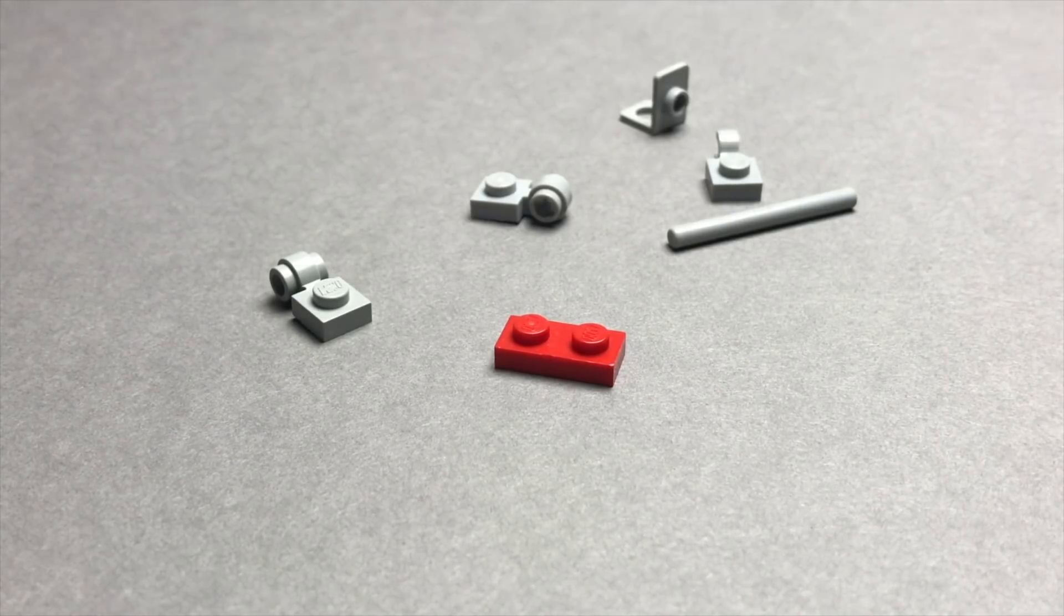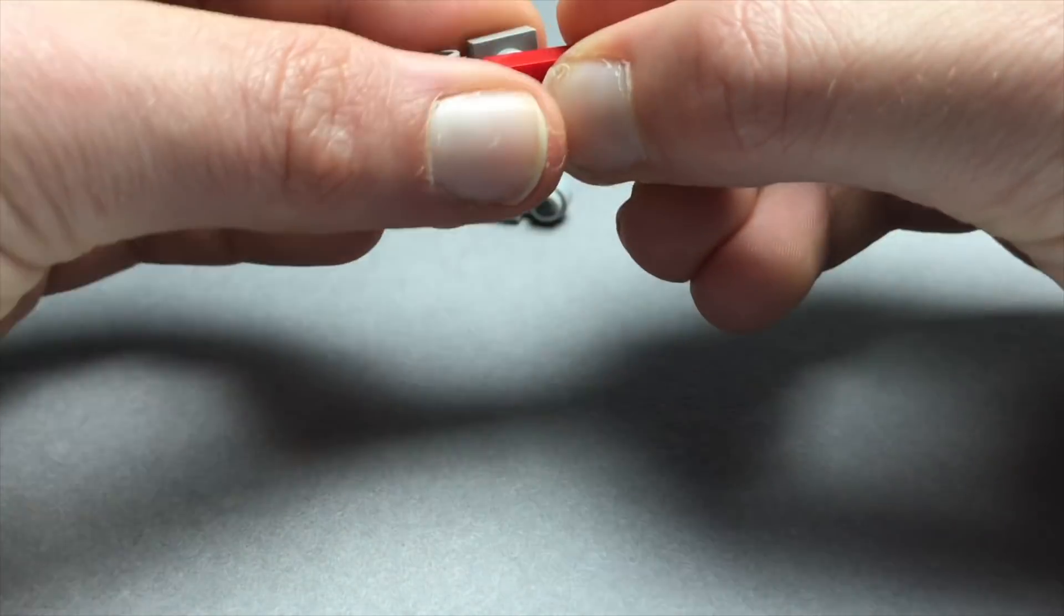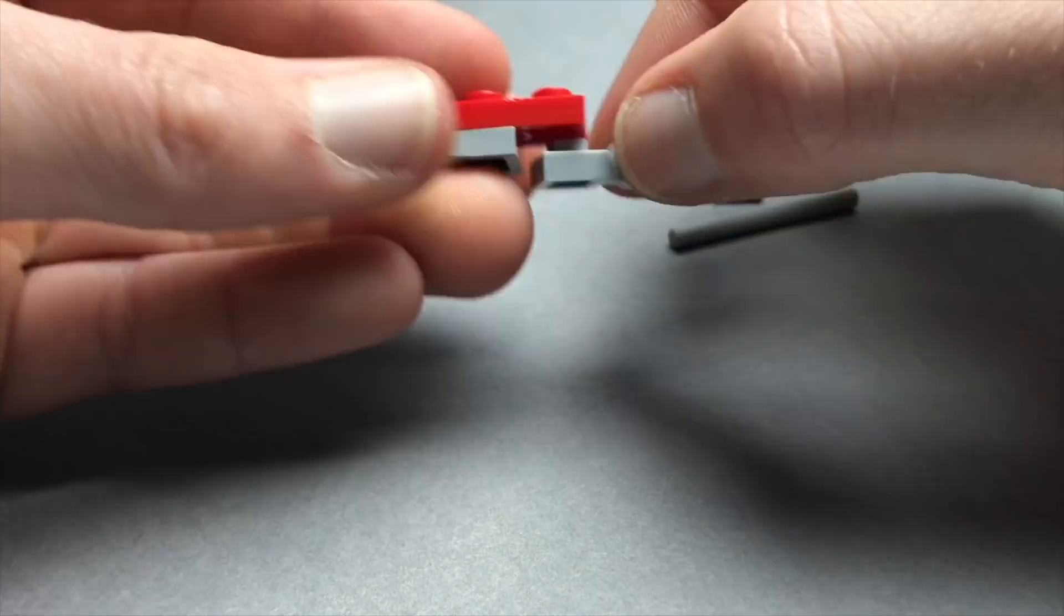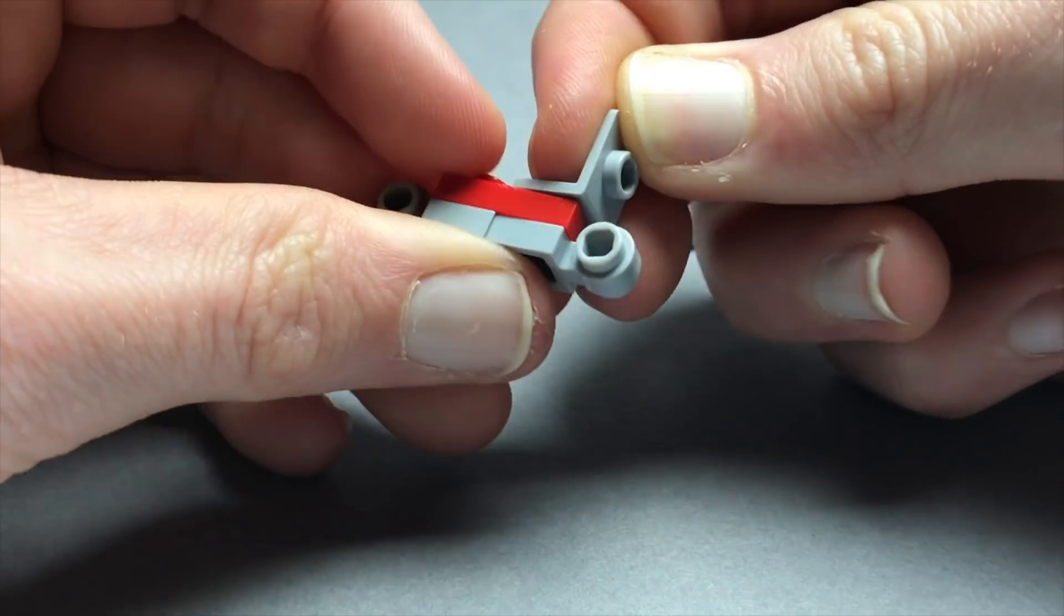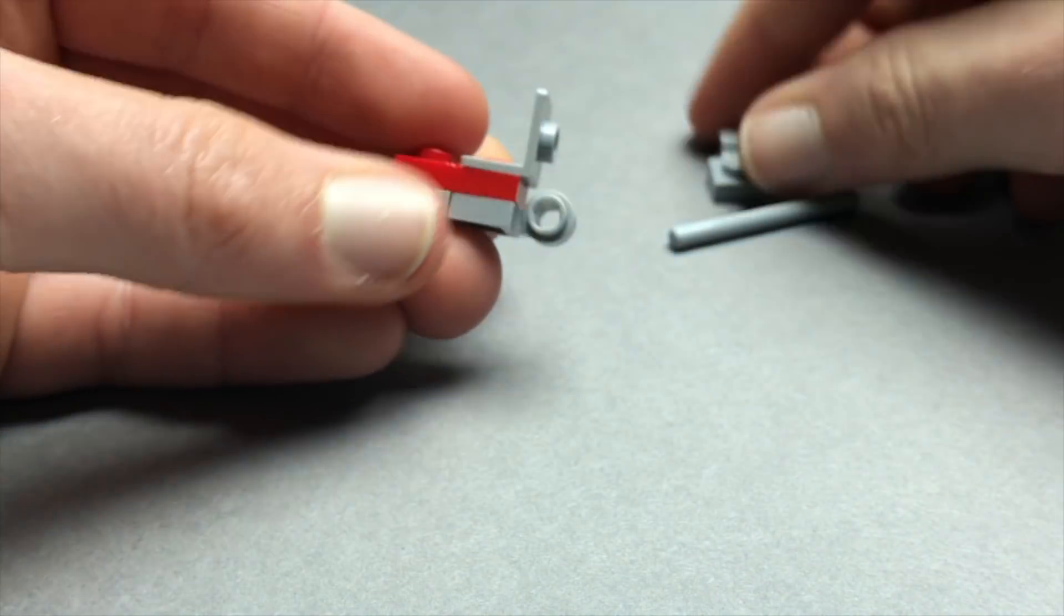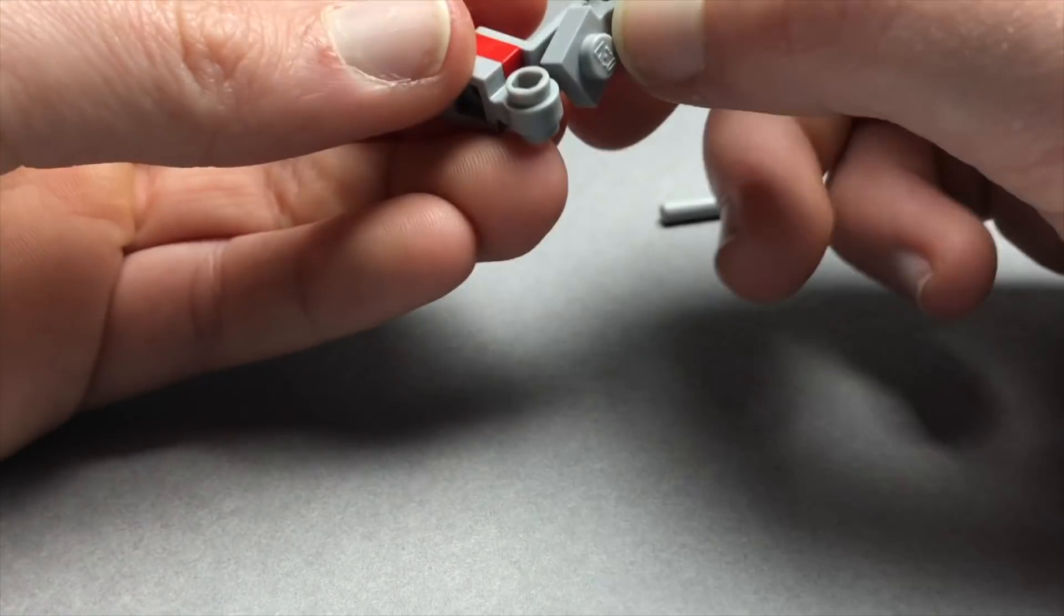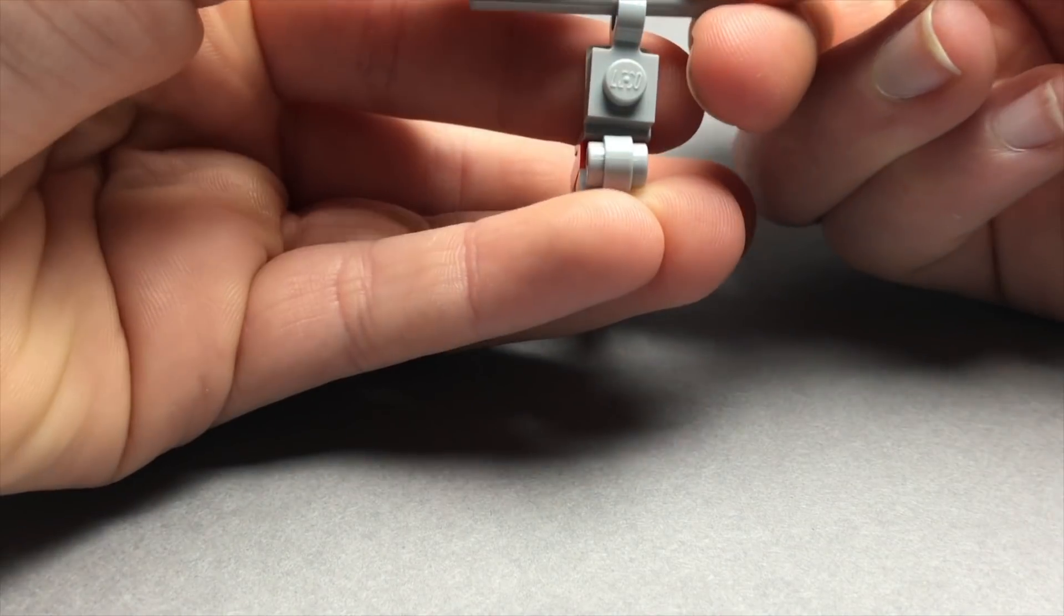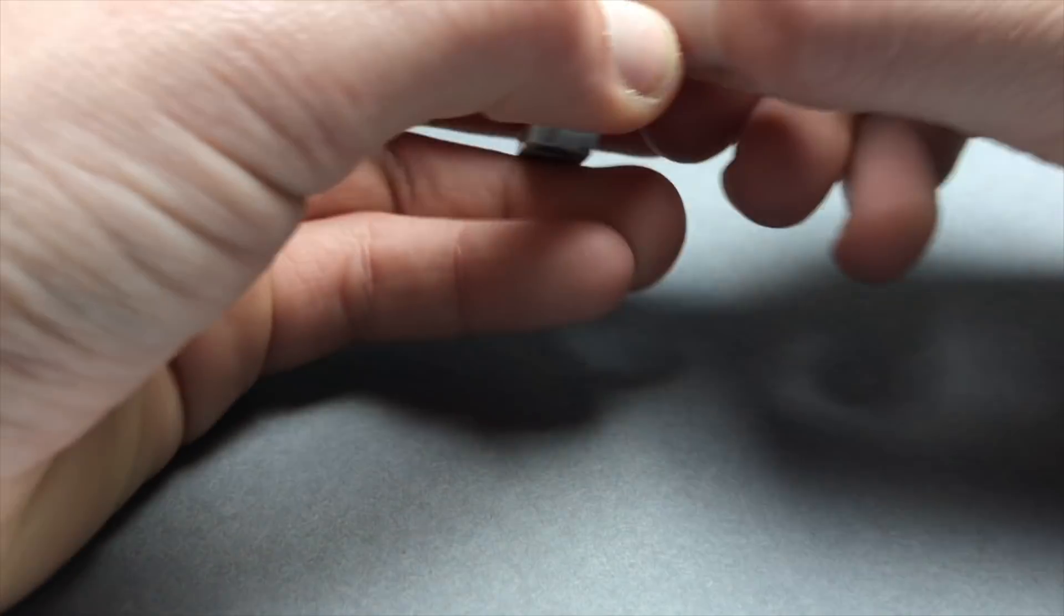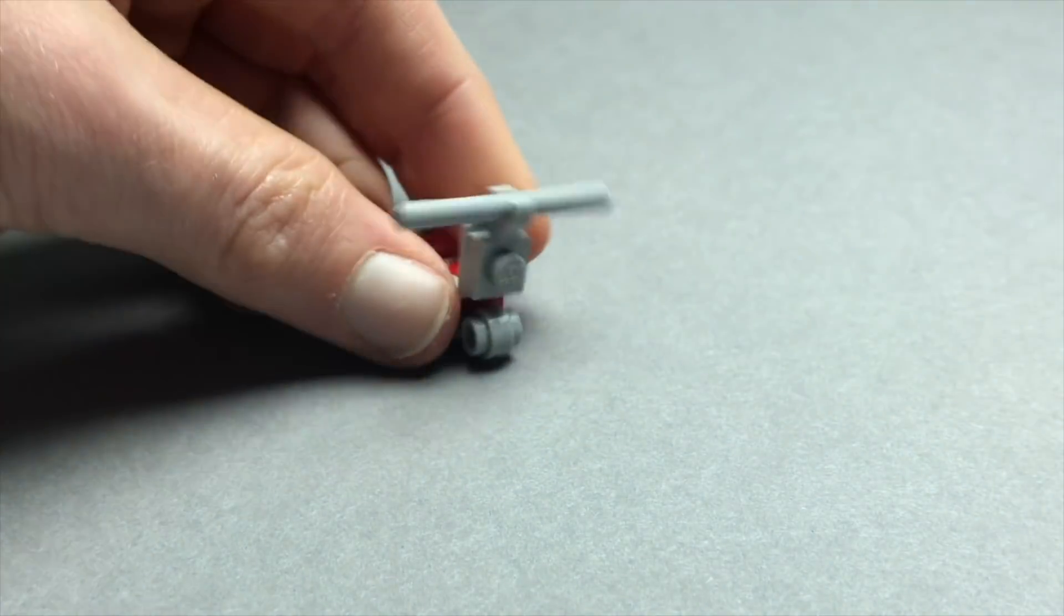To make a scooter, you can take a 1x2 plate and then place two of these 1x1 modified plates, one of these pieces over here on top, and then one of these clips. Then you just need to take a 4x4 long bar and that pretty much does it for your scooter.